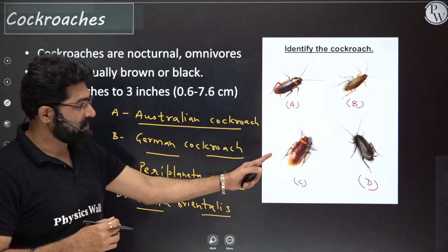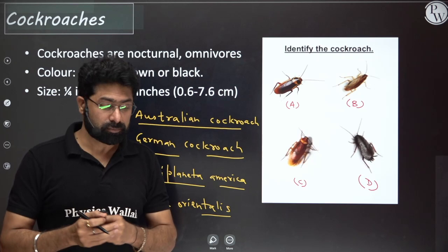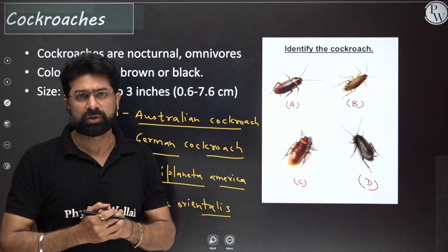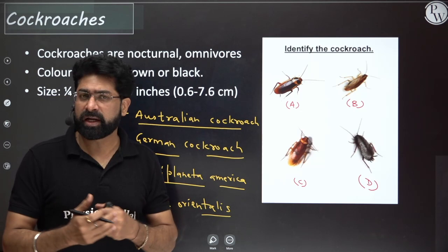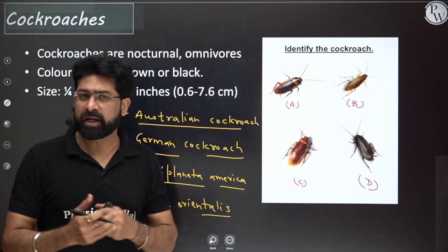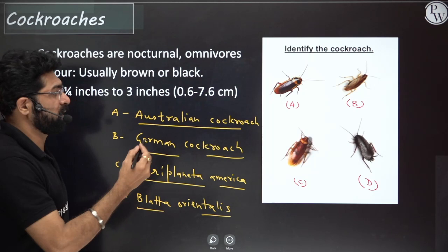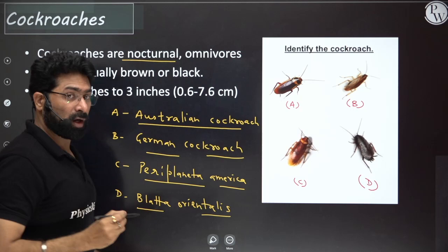For survival you need to be very strong and better suited to overcome other species, and Periplaneta americana has done that. Cockroaches are very successful organisms on earth — they evolved long back, some 200 million years ago, and still exist. We can call them living fossils. Even if atomic warfare happens, they are going to survive — they can tolerate radiation much more than humans.